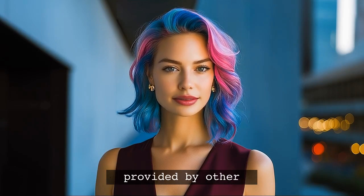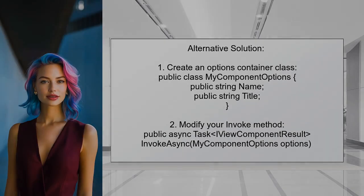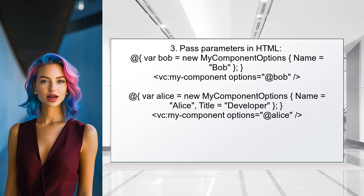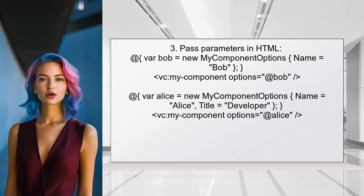Now let's look at the answers provided by other users. An alternative solution proposed by another user involves creating an options container class. This class will hold your parameters, allowing you to pass them together. For example, you can define a class called MyComponentOptions with properties for name and title.